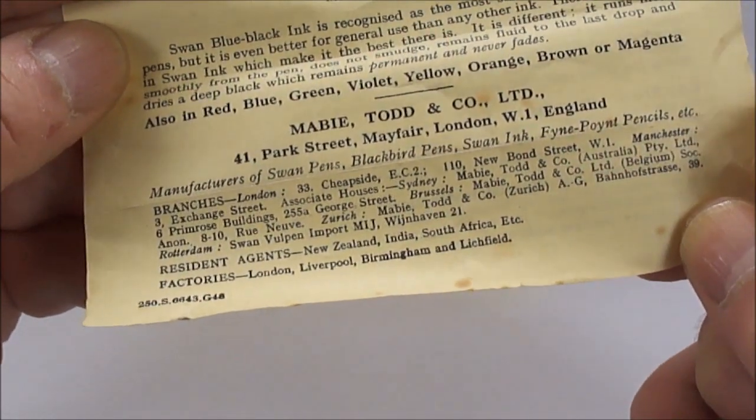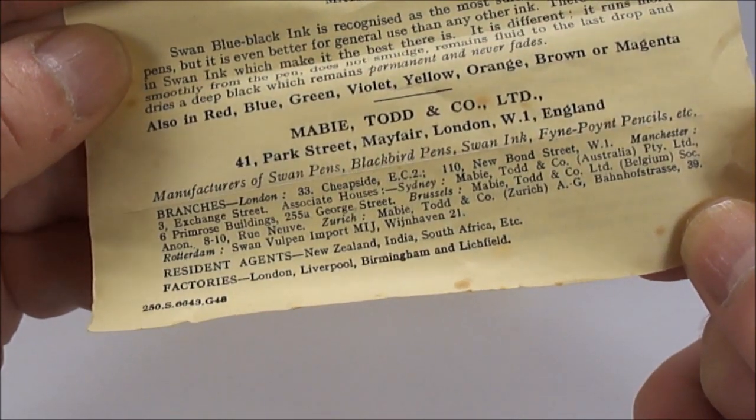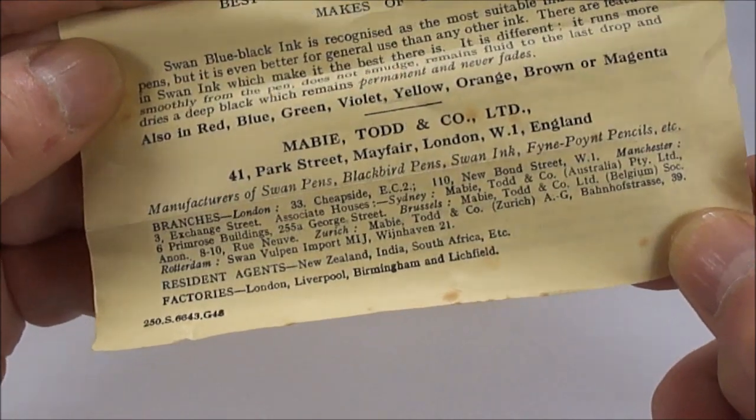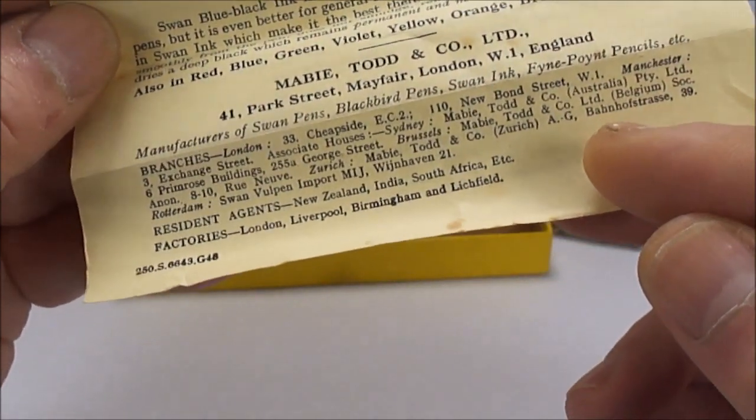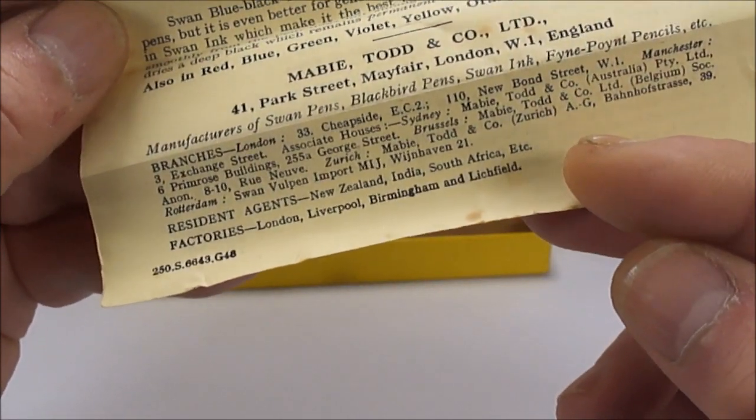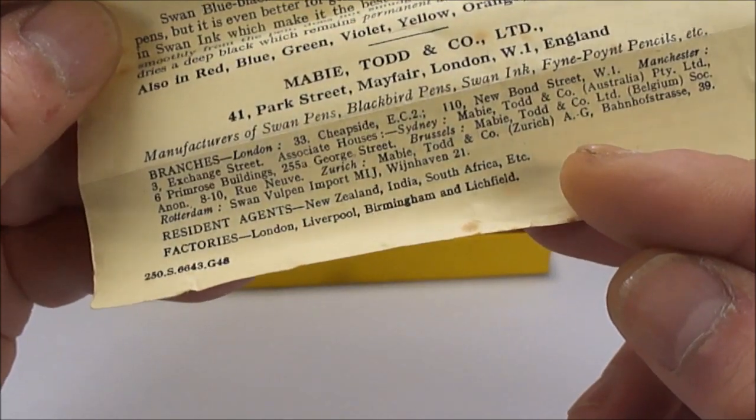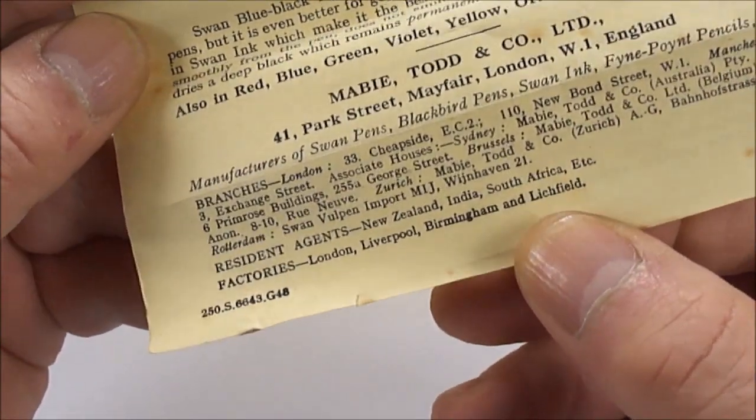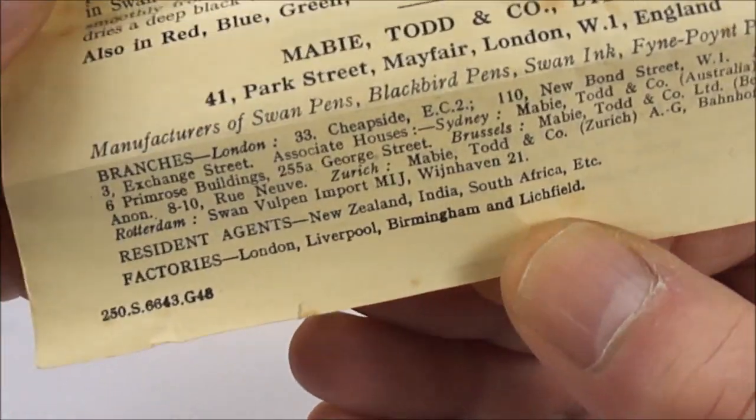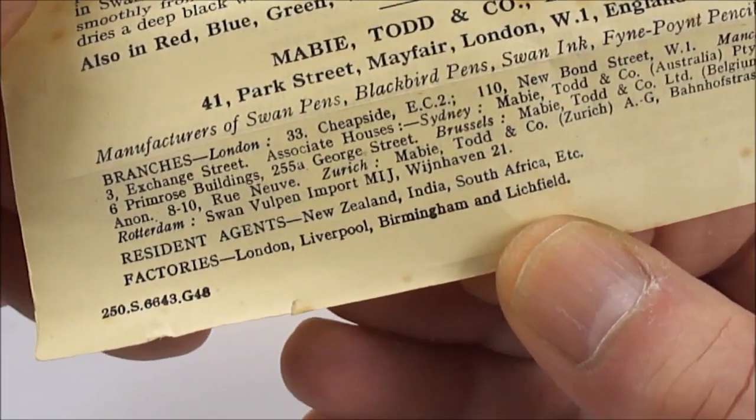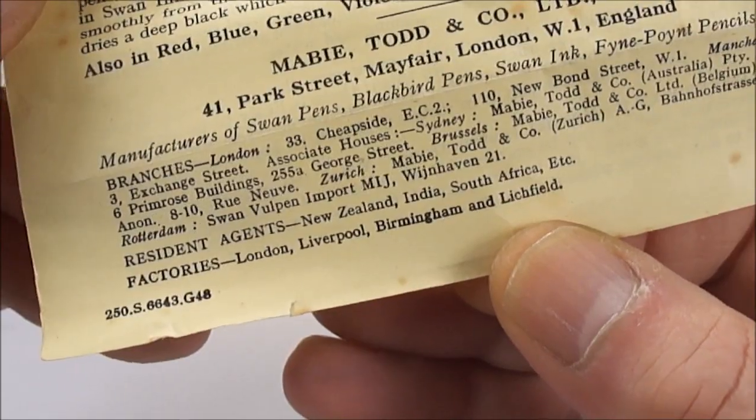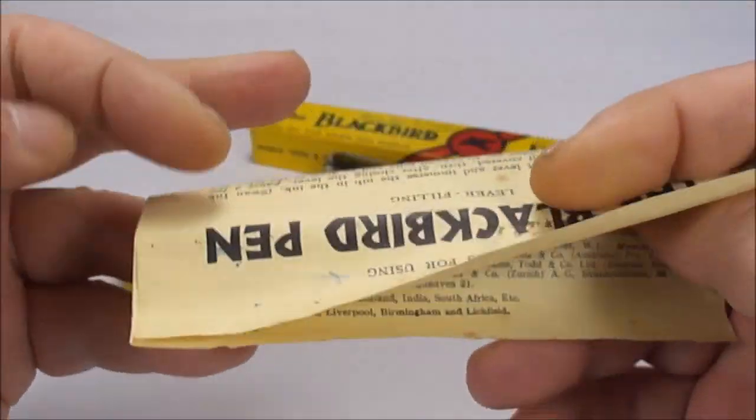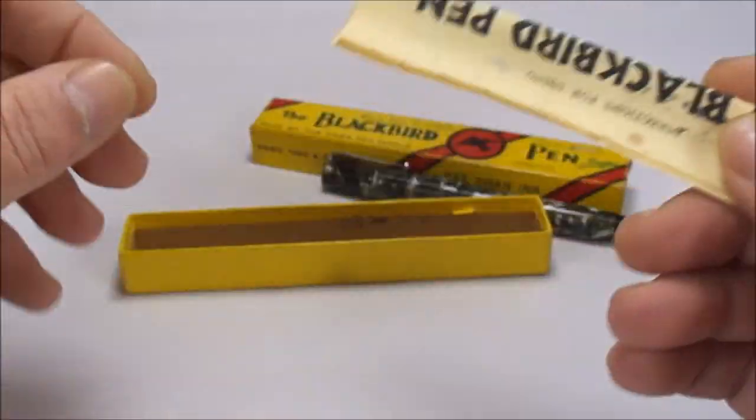London, Brussels, Zurich. What else can I see? Belgium, etc. Resident agents, New Zealand, India, South Africa. And then to the very bottom, quite interesting, factories. Let's bring it a little bit closer for you. London, Liverpool, Birmingham and Litchfield. So a nice little bit of social history.